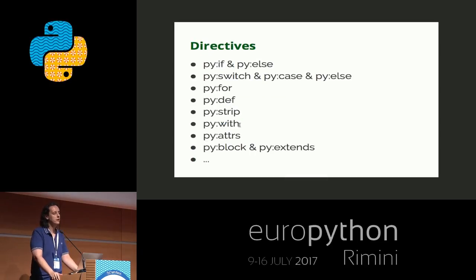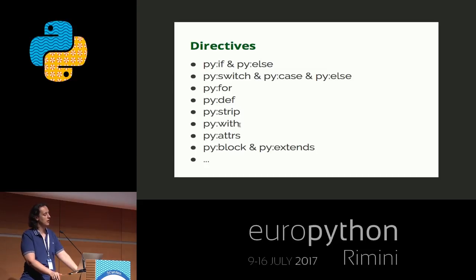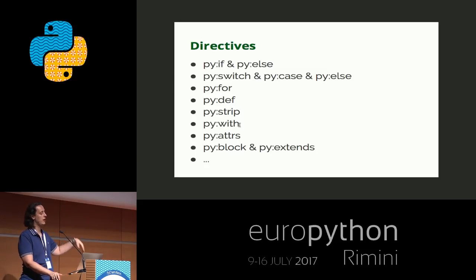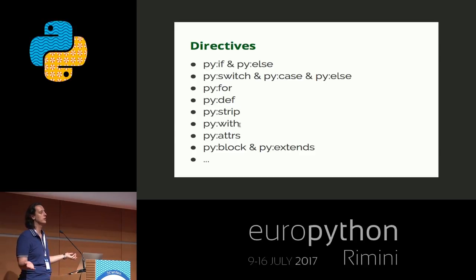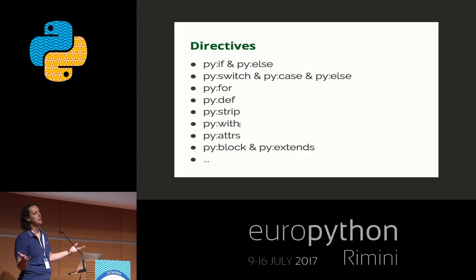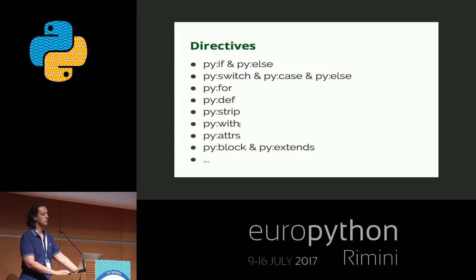The directives provided by Kajiki are the most common ones. You can have if-else, switch, for, defs, strip. I'm not going to spend too much time on this because I suppose that most of you already work with some kind of template engine and they nearly all behave the same way.